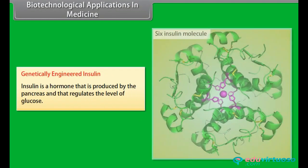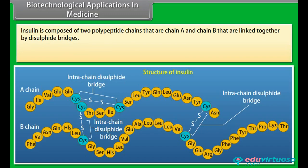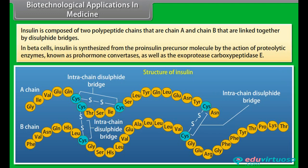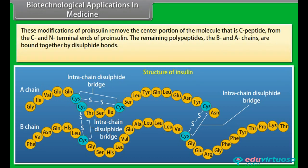Biotechnological applications in medicine: genetically engineered insulin. Insulin is a hormone produced by the pancreas that regulates the level of glucose. Insulin is composed of two polypeptide chains, chain A and chain B, linked together by disulfide bridges. In beta cells, insulin is synthesized from the pro-insulin precursor molecule by the action of proteolytic enzymes known as pro-hormone convertases as well as exoprotease carboxypeptidase E. These modifications remove the C-peptide from the C and N-terminal ends of pro-insulin. The remaining B and A chains are bound together by disulfide bonds, and the C-peptide is not present in the mature insulin.